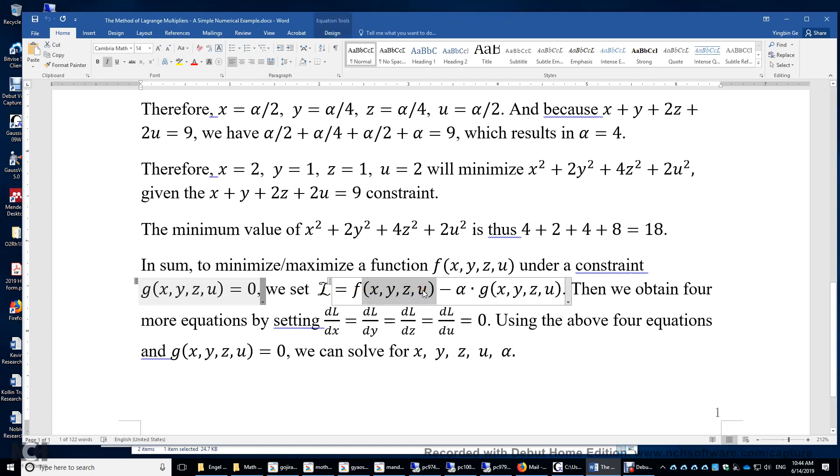The Lagrangian equals the function to be optimized, either minimize or maximize, minus alpha. Over here, alpha is the so-called Lagrangian multiplier times the constraint. And over here, because this g is always equals zero, that means by minimizing or maximizing L,